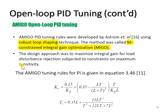The approach is simple. To do the open-loop PID tuning for AMIGO, you still need the FOPDT, which is similar to the Ziegler-Nichols open-loop tuning approach.